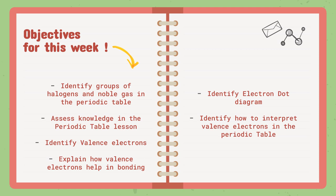And we are going to identify how to interpret valence electrons in the periodic table. So, we are going to understand what valence electrons mean, and then we have to interpret that and connect it to the periodic table. How are these two interconnected? How can I get the valence electrons through the periodic table? We are going to learn that this week. These are our objectives for this week.